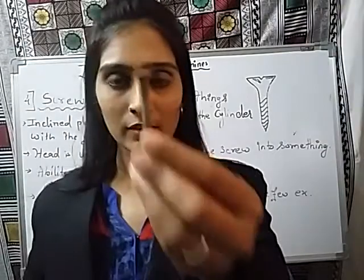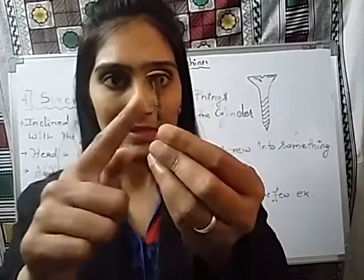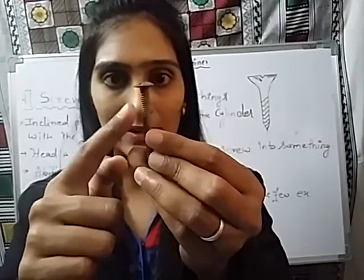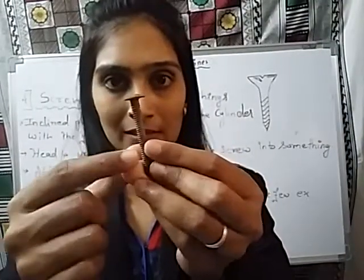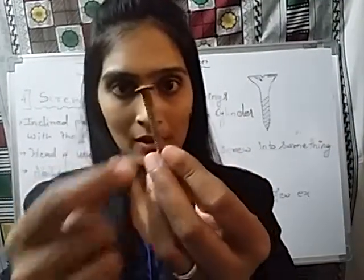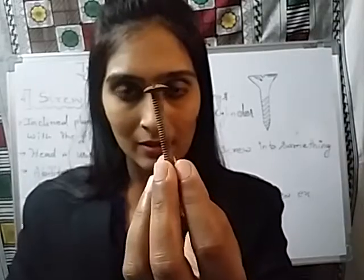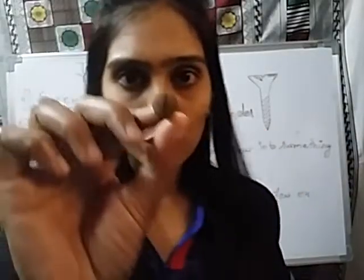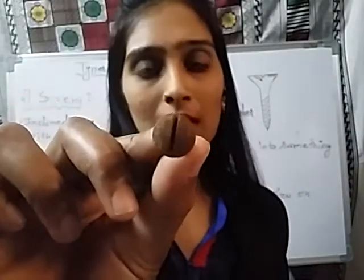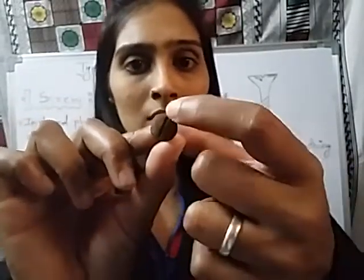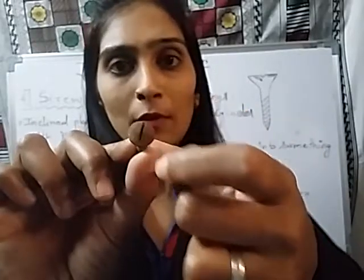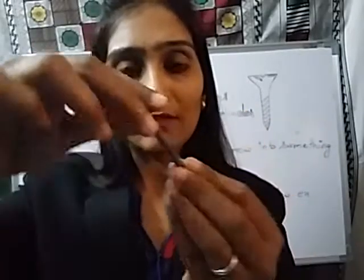This is an example of the screw. You can see here the number of inclined planes surrounding a circular cylinder, and you can also see this notch. With the help of this notch we can fix this screw into a certain object.